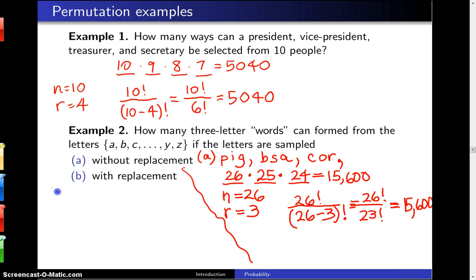For part B, this time we're sampling with replacement. So we're allowing not only words like pig and BSA, but we're also allowing repeats. You could have AAA for American Automobile Association, AMA for American Medical Association, WWW for the World Wide Web, etc. Those are the types of words you can form when sampling with replacement.